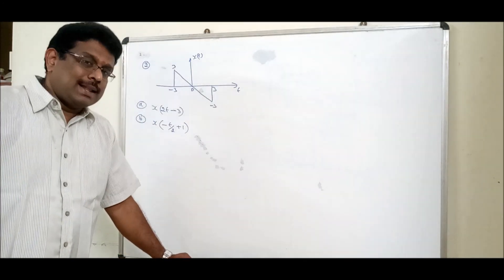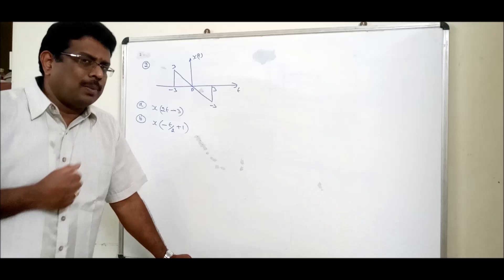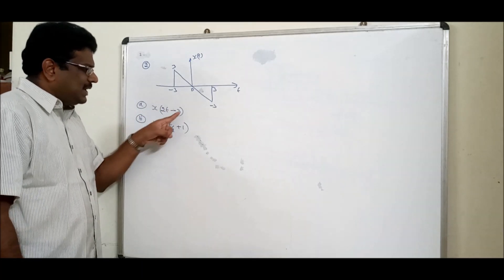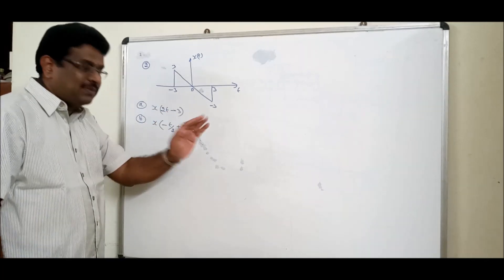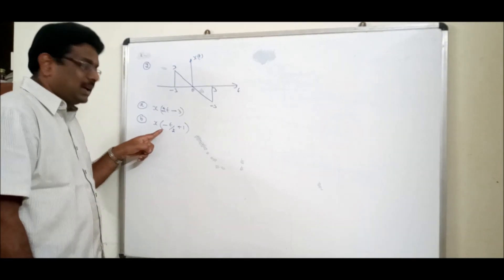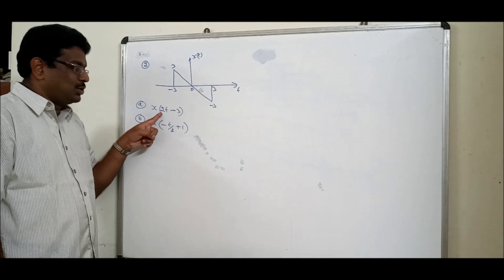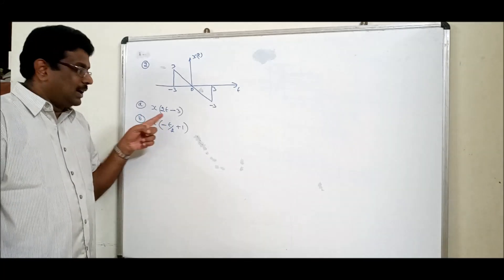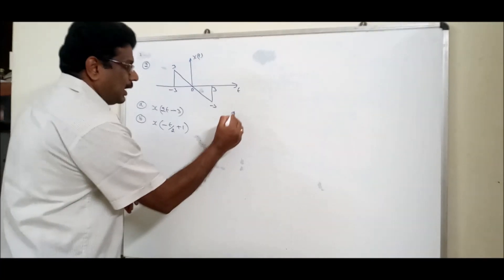Let us now see another problem where we have a combination of two or even three operations. Looking at this particular problem: x(2t − 3) — compression is there, right shift is also there. x(t/2 + 1) — expansion is there, left shift is also there. Recall: what should I do first? As per the precedence rule, first I have to do shifting, then I have to do scaling.